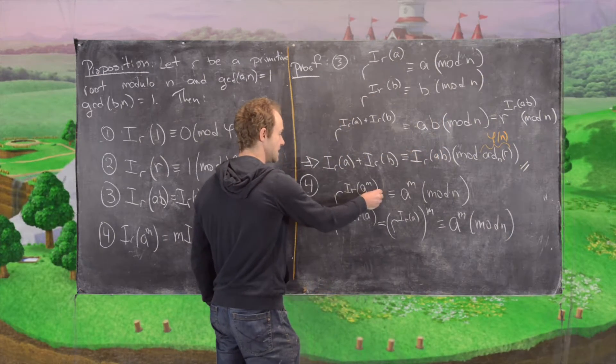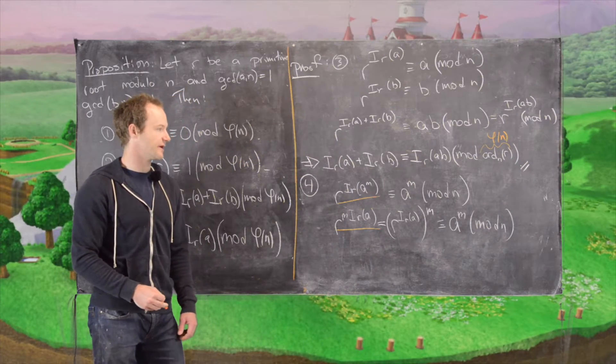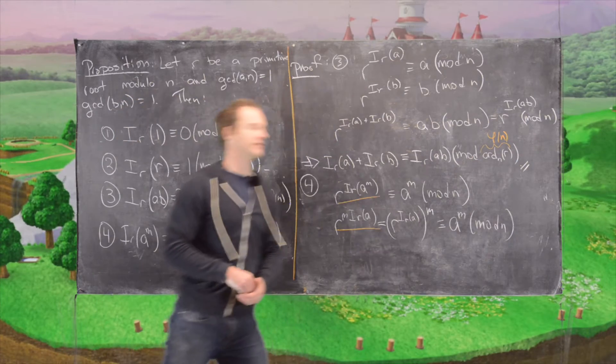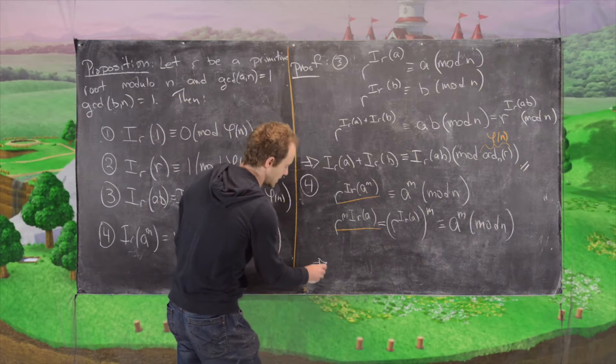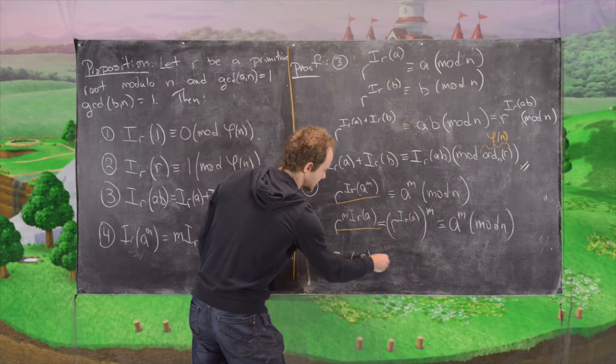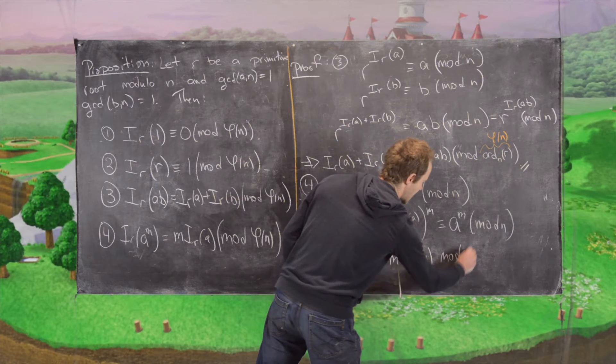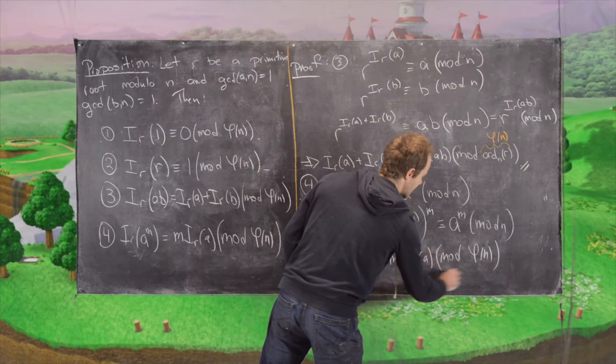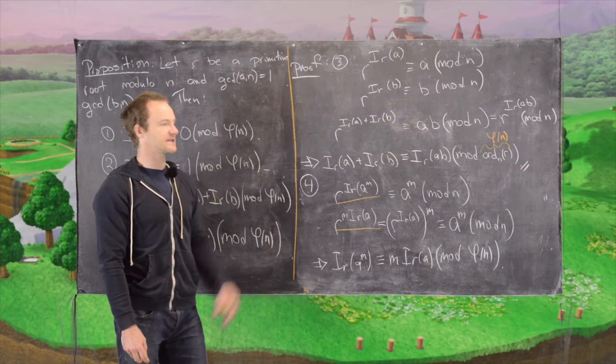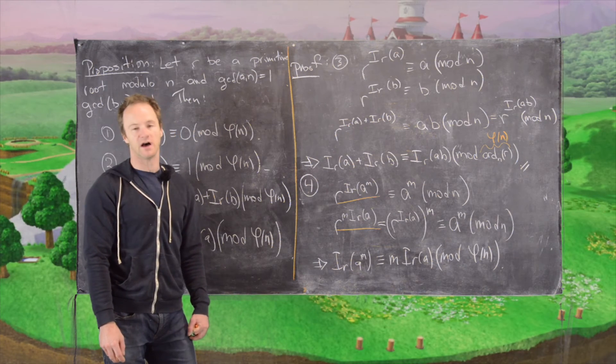So again, we have those two orange underlined terms are congruent modulo n, which tells you that their exponents are congruent modulo the order of r. In other words, we have i_r(a^m) is congruent to m times i_r(a), and now we're working mod phi of n. The takeaway here is that if you're working inside exponents, you don't work modulo n, but you work modulo phi of n.